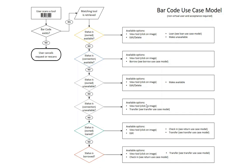Just to review a couple of scenarios — this is available in our documentation for download. When you start off, you scan a tool and it reads the number. If the barcode exists, it takes you through the workflow process. If the barcode does not exist, it gives you a message saying it doesn't exist and asks if you want to scan another tool or exit. If it does retrieve a matching barcode, it looks at who is the owner of the tool and what the tool status is.